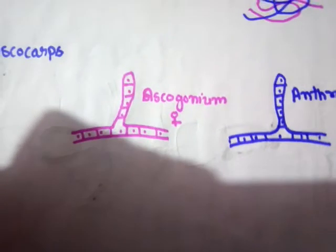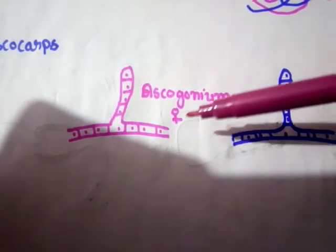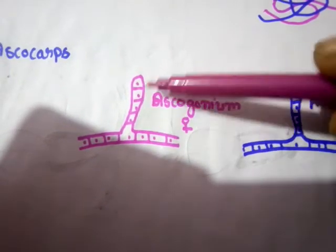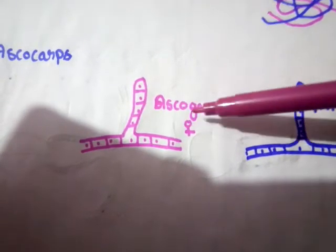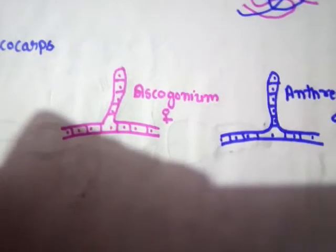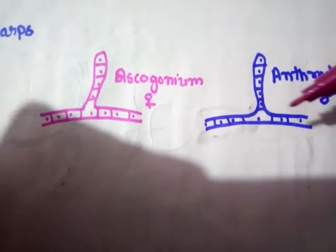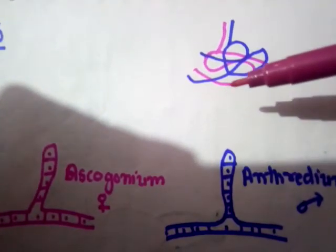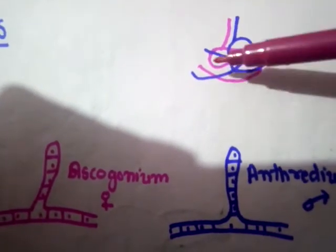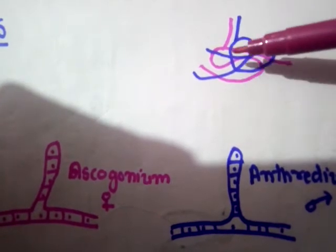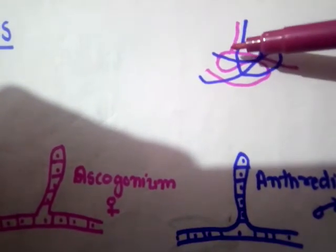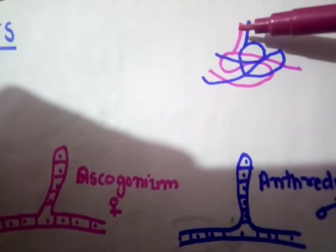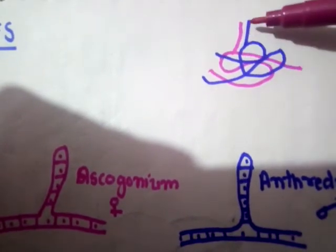In the reproduction season, on the negative strain or female hyphae, the female sex organ arises — called the ascogonium — and on the positive strain or male hyphae, the male reproductive organ arises — called the antheridium. You can see the structure of the mycelium of Penicillium, where two strain hyphae are coiled with each other and you can see the proximity between these two sex organs. In pink color you can see the ascogonium, and in blue color the antheridium.